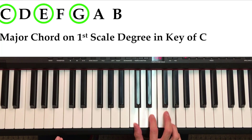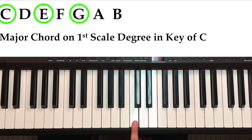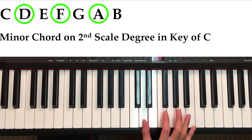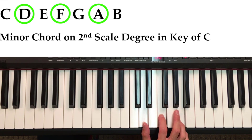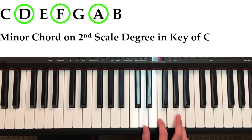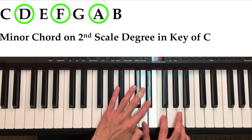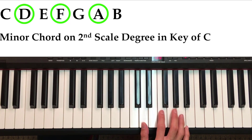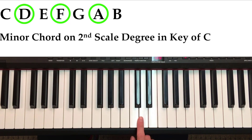That's our first chord of the key of C — our C major chord, or our one major. Now, if we go to the second scale degree, it's a D. So we skip every other letter: D, skip the E, F, skip the G, A. That creates a minor chord, or a D minor chord. We have a minor third — two in the middle — and a major third — three in the middle. So that is our two minor, because it's the second scale degree.